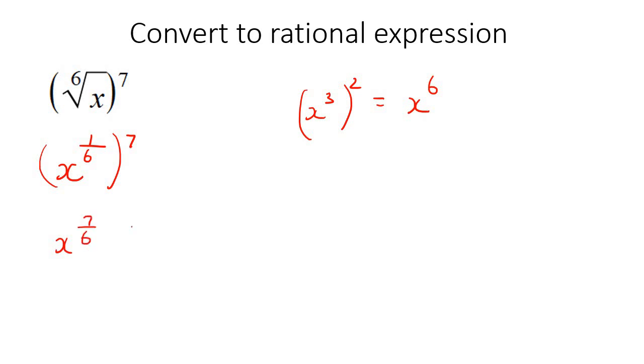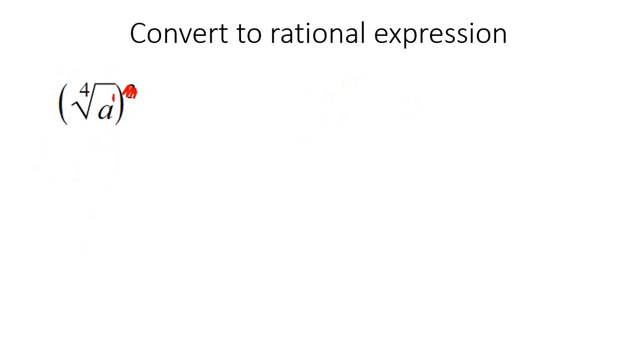So step one, don't worry about the three. Take this number, which is a one, and rewrite it as a to the inside number over the outside number. It's always the inside number over the outside number. And then remember that there is this three, so then you multiply, and that's going to give you a to the power of three over four.